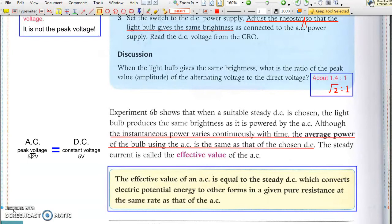So an AC of peak voltage 5 root 2 volts gives an average power the same as that of a 5 volts DC. We say that such AC has an effective value of 5 volts, which is also called the root mean square value of the AC.